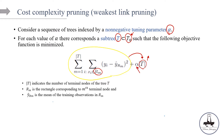So what does this mean? T indicates the number of terminal nodes in the tree. R_m is the region or rectangle corresponding to the m-th terminal node. And ŷ_{R_m} is the mean of the training observations in R_m. This is for a regression setup; for classification the idea is pretty much the same. Cost complexity means penalizing the complex model, penalizing the bushy tree, by adding this part to the minimization problem.